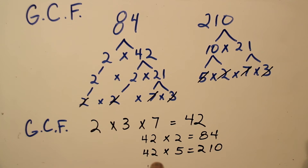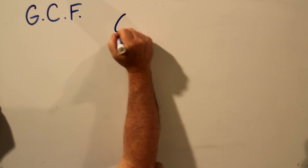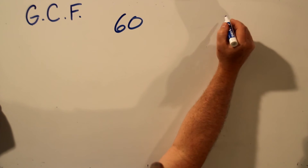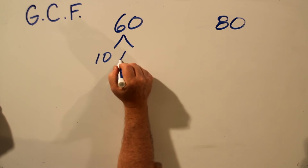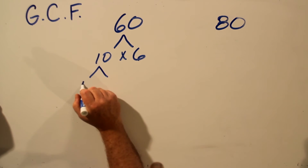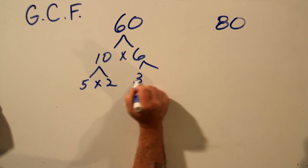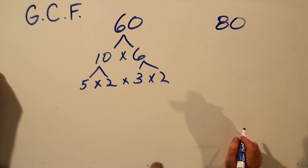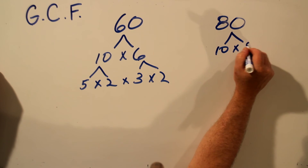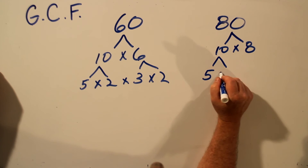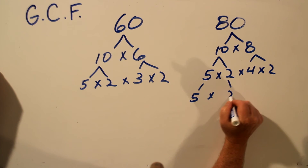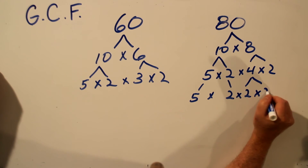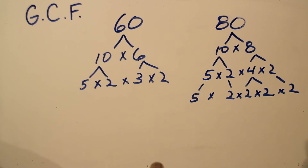In fact, 42 is the largest number that goes into both 84 and 210, so it is the greatest common factor. Let's do one more example. Find the greatest common factor of 60 and 80. 60 ends in 0, so we know 10 goes into 60: 10 times 6. 10 is 5 times 2, and 6 is 3 times 2 — those numbers are all prime. 10 goes into 80 as well: 10 times 8. 10 is 5 times 2, and 8 is 4 times 2. Then 4 is 2 times 2. And those are the prime factors for 80.